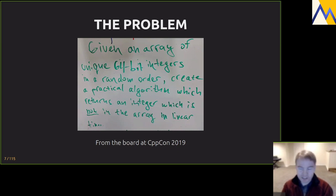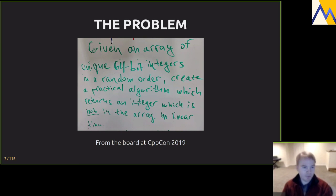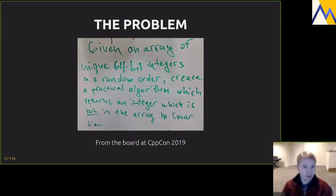The genesis of this talk: at CppCon 2019, my local Denver meetup group was looking for a speaker shortly after the conference. I agreed but didn't know what to do it on, and then someone wrote this problem on a board at CppCon: given an array of unique 64-bit integers in a random order, create a practical algorithm that returns an integer which is not in the array, in linear time. Those of you listening are probably already thinking about ways to solve this.